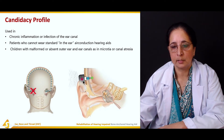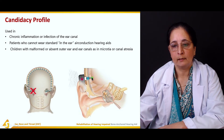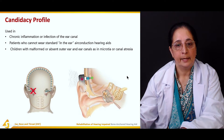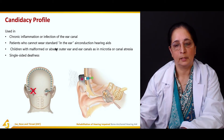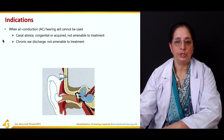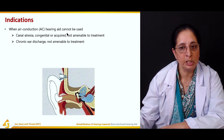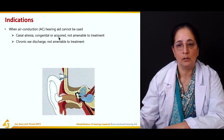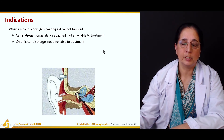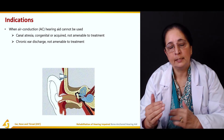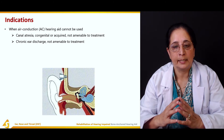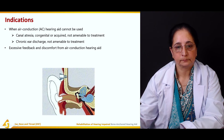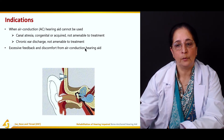The three components of the bone anchored hearing aid are the sound processor, abutment, and anchor. Single-sided deafness is also an indication. Other indications include atresia — congenital or acquired — not amenable to treatment, and chronic ear discharge not amenable to treatment; all these conditions make the bone anchored hearing aid the indicated choice.